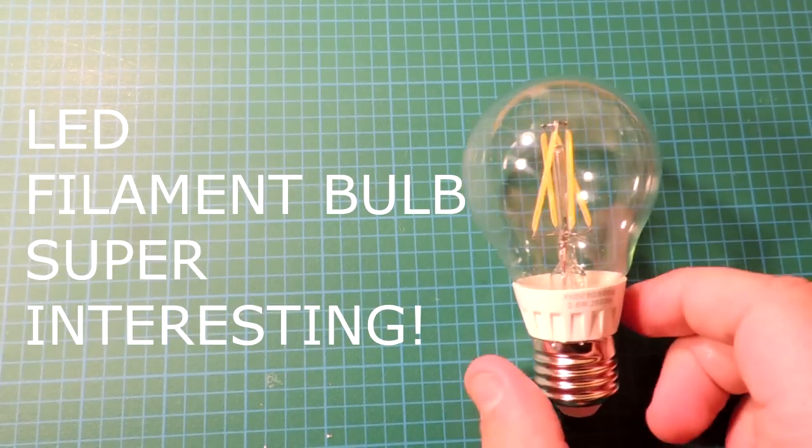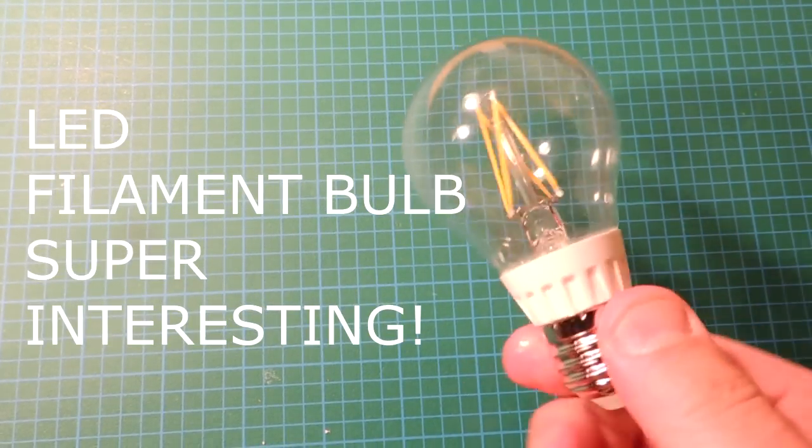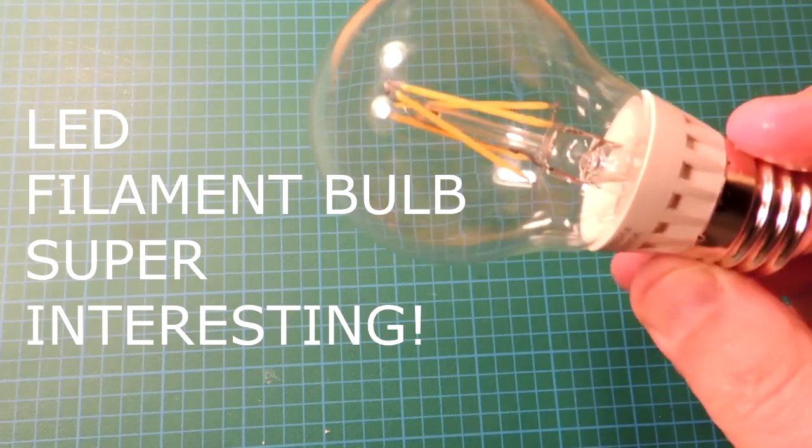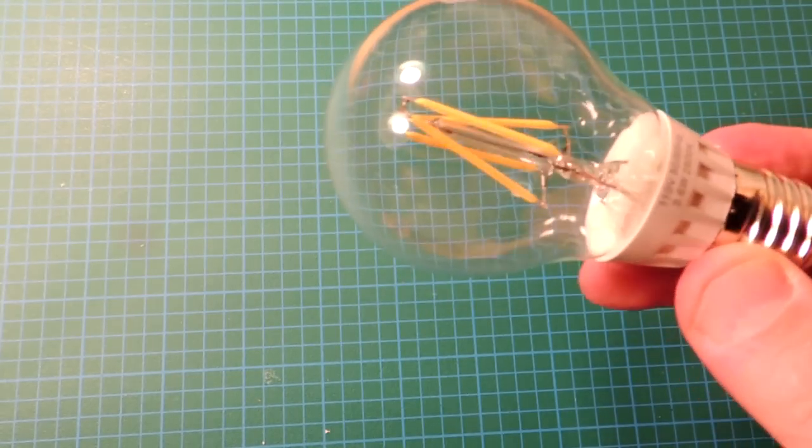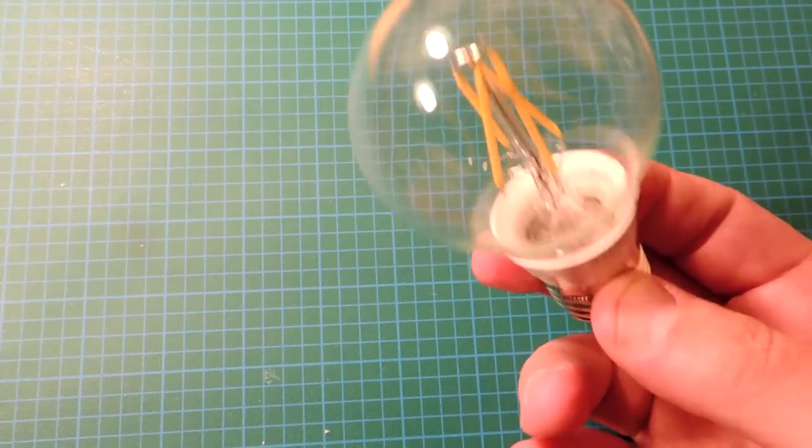Okay, here's a LED bulb that's super interesting. It's called an LED filament bulb. You can see the yellow little lines there and I guess those are LEDs of some sort.